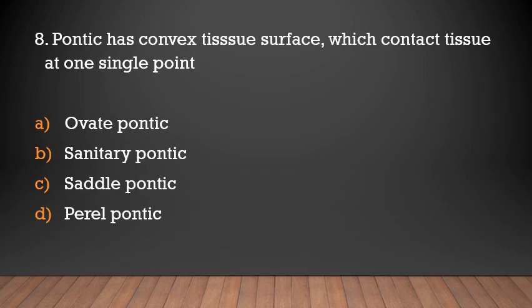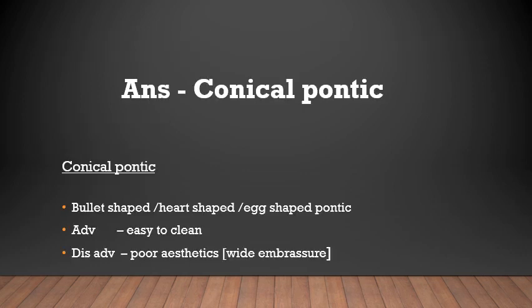Which pontic has a convex tissue surface that contacts tissue at one single point: ovoid pontic, sanitary pontic, saddle pontic, or perel pontic? The answer is conical pontic — otherwise known as bullet-shaped, heart-shaped, or X-shaped pontic.